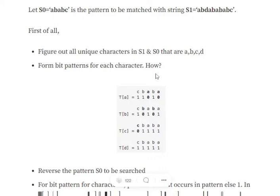How are we creating these bit patterns? First, you need to reverse s0. So if it is 'ababc', we reverse it to 'cbaba'. For whichever character that particular bit pattern is for, we give a value of 0; for all others, we give a value of 1. So once you have the reversed string 'cbaba', wherever we have 'a' we put 0, and elsewhere we put 1. The bit pattern for a therefore becomes 11010.